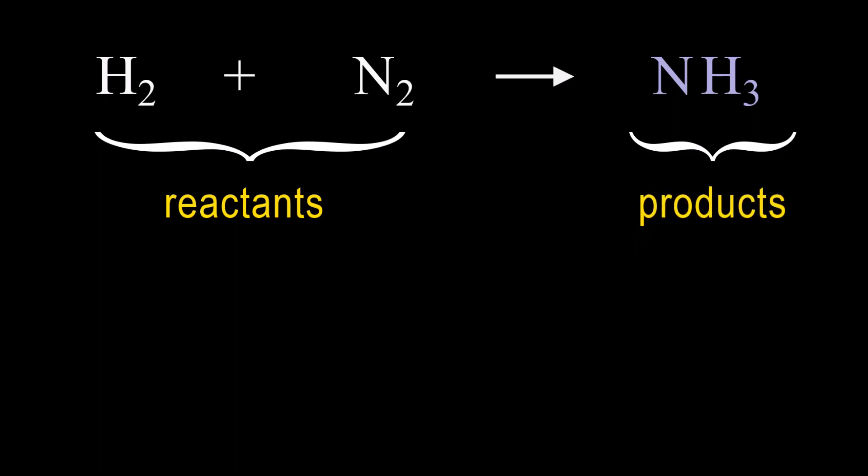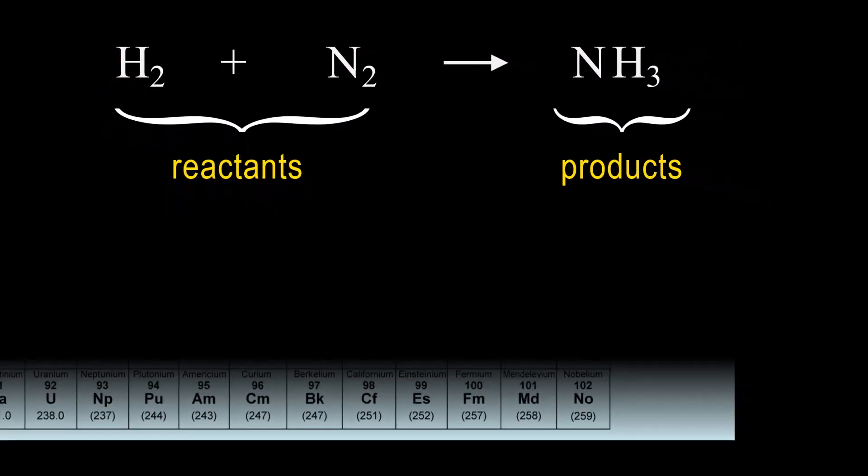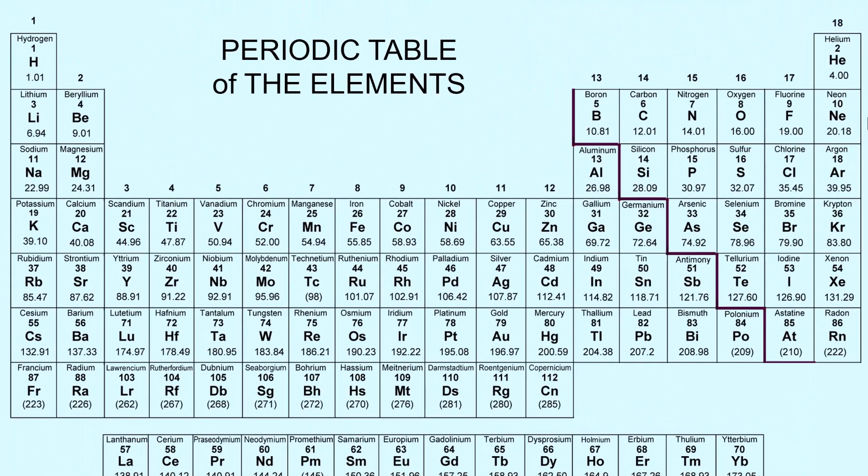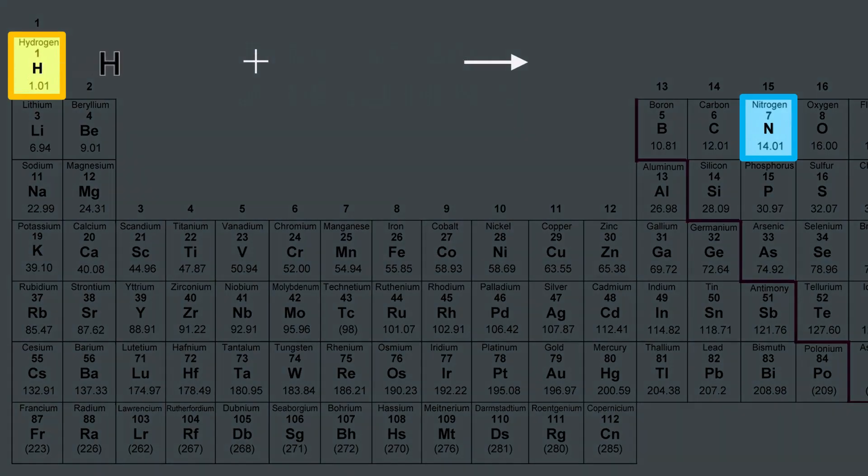So what do the letters and numbers mean in the equation? The letters are symbols of elements taken from the periodic table of elements. Hydrogen is H, nitrogen is N. And so the Hs and the Ns in the equation tell us the elements used in the reaction, hydrogen and nitrogen.